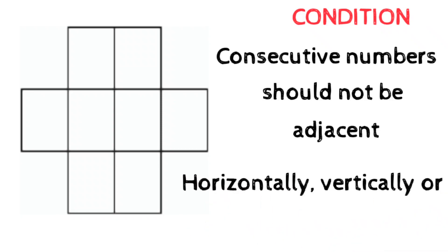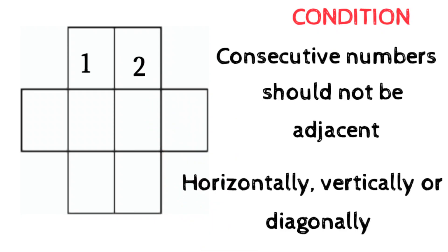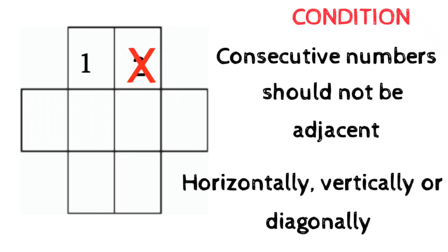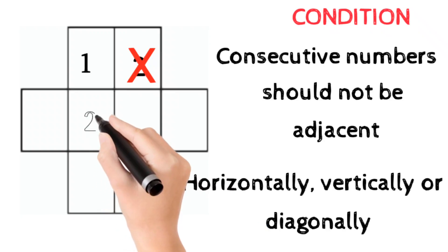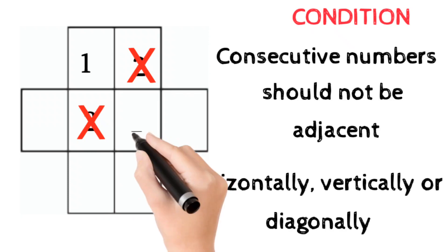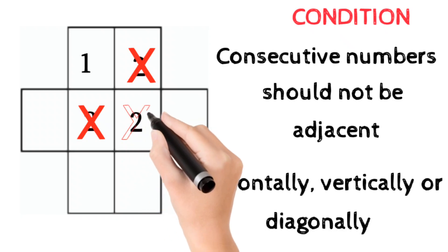Let me rewrite the condition: consecutive numbers should not be adjacent horizontally, vertically, or diagonally. Let me fill one box with number one. The conjugate of one is two. If I fill two in the box directly beside it, then one and two are horizontally adjacent — that is not correct. If I write two in the box directly below, they are vertically adjacent — also not correct. If I write two diagonally next to one, they are diagonally adjacent — also not correct.